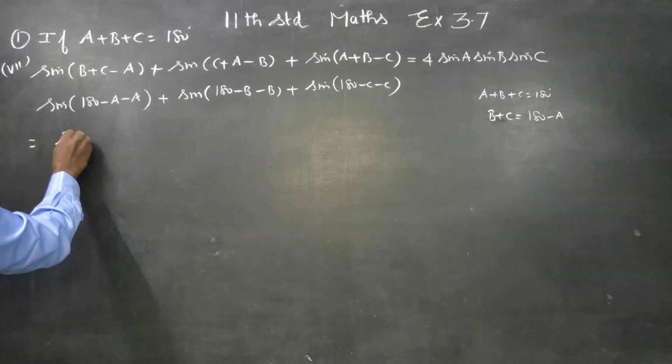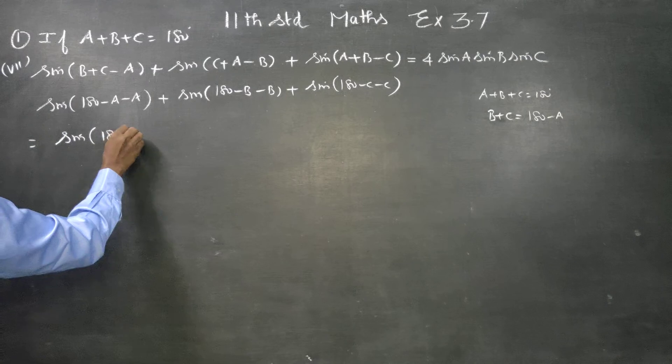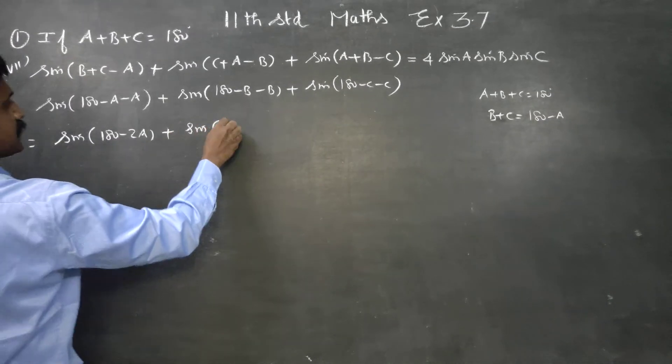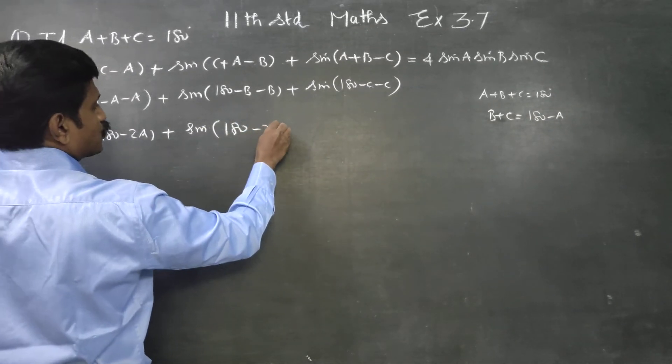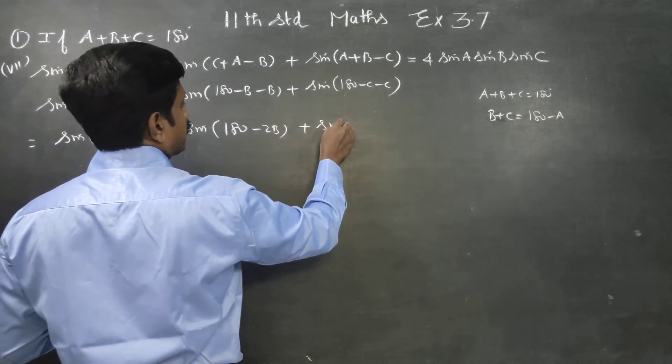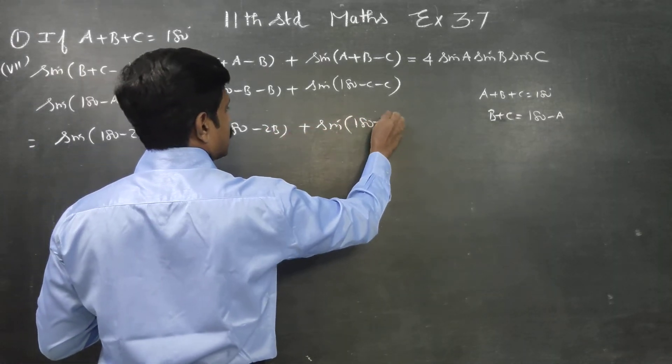This can be simplified as sin 180 minus 2A. This can be simplified as sin 180 minus 2B. And this can be simplified as sin 180 minus 2C.